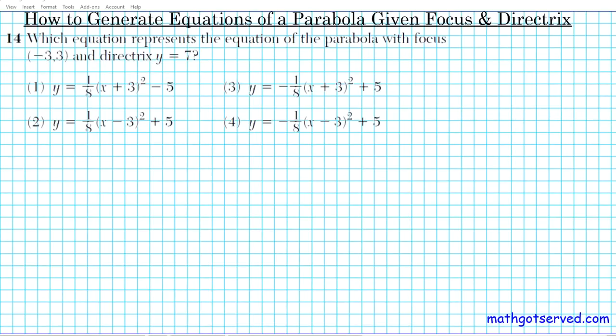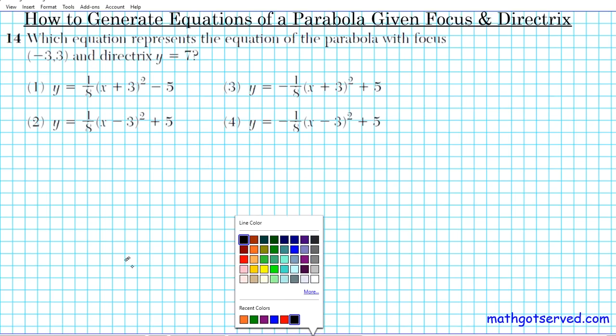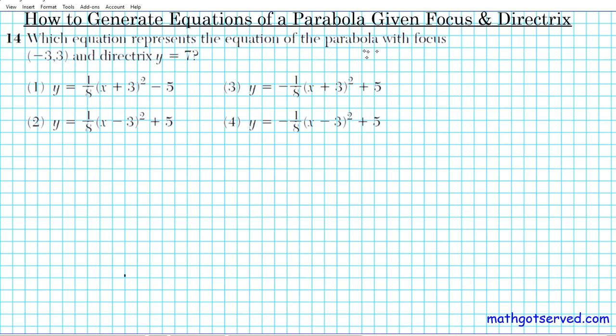In question 14, we're looking at how to generate equations of a parabola given the focus and directrix. Question 14 reads: which equation represents the equation of the parabola with focus (-3, 3) and directrix y = -7?